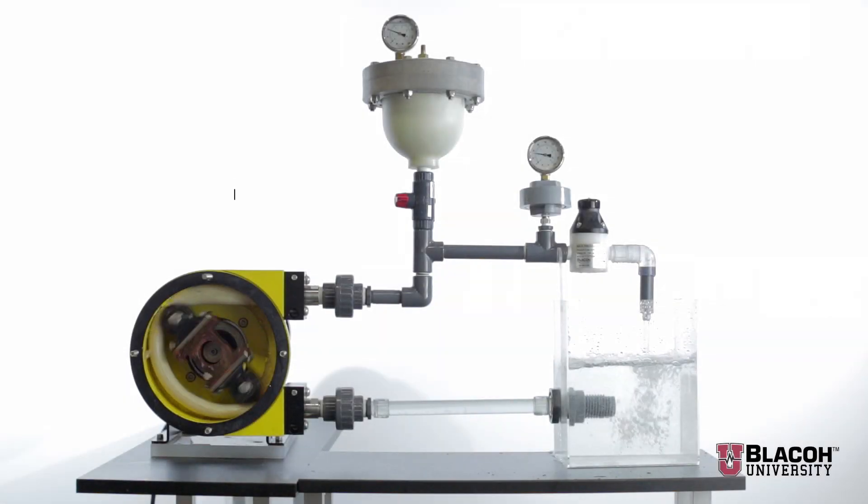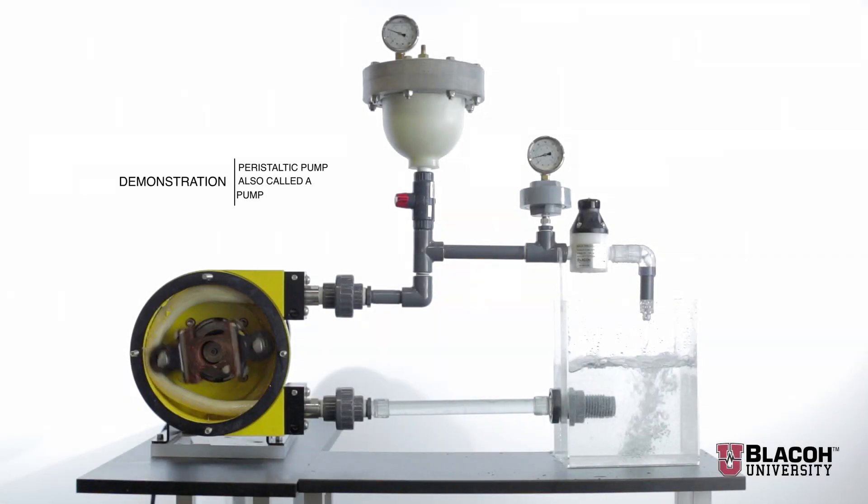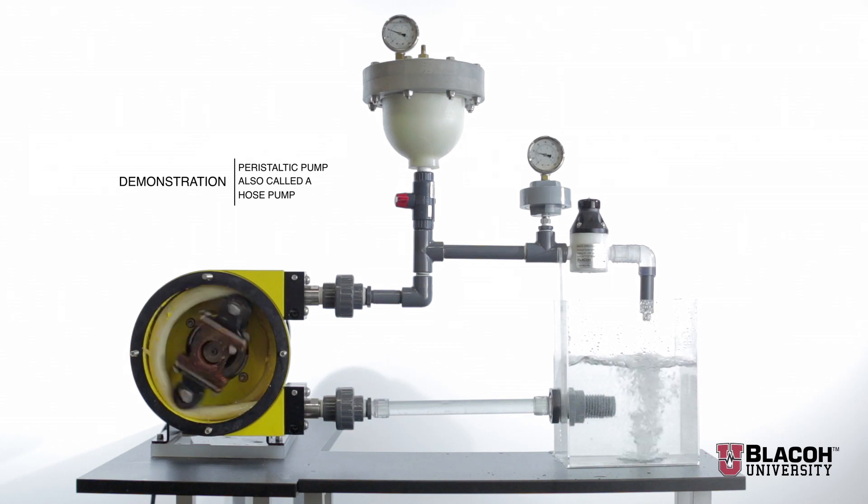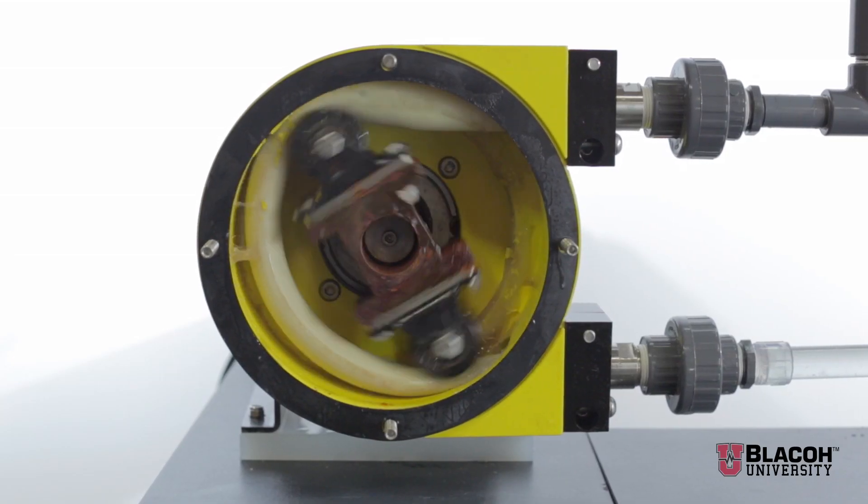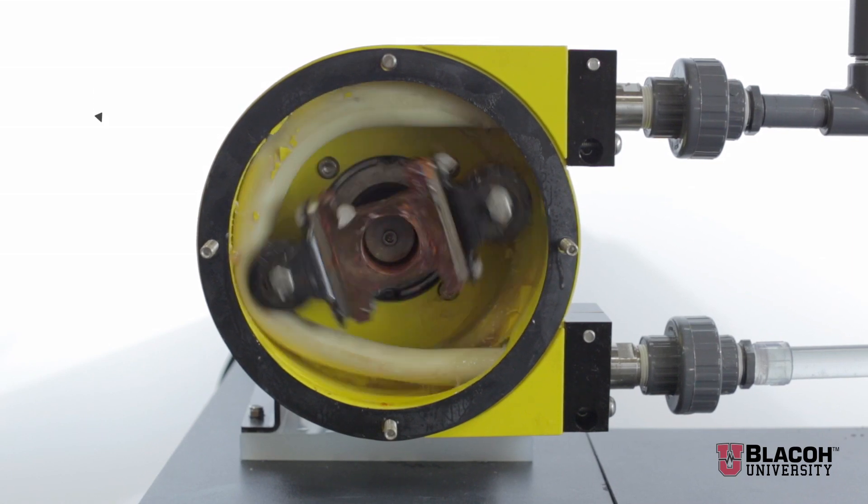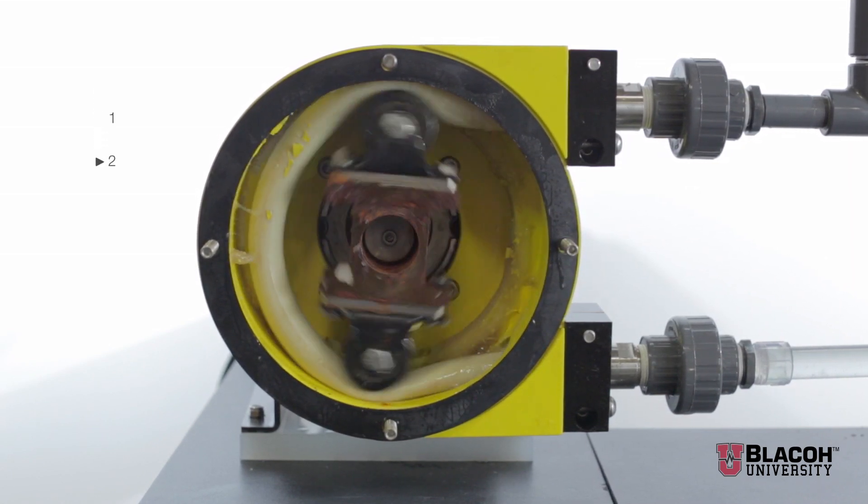For this pulsation dampening demonstration we're using a peristaltic pump, also called a hose pump. Inside the case there is a hose and the pumping action is derived by using either one, two, or three roller shoes.